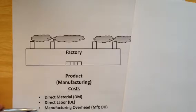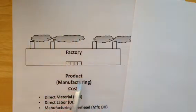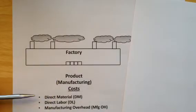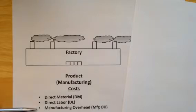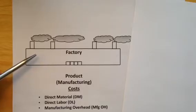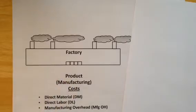Finally, the third category under product costs is manufacturing overhead. If we look at all of the expenses in this factory, they are product costs. The expenses that are not categorized as direct material or direct labor will be captured under this third general category of manufacturing overhead. What does it include? How about the utilities in the factory, the insurance on the factory, or the monthly lease on the factory? Let's take a look at a breakout of all these costs for a deeper look at what goes into manufacturing overhead.